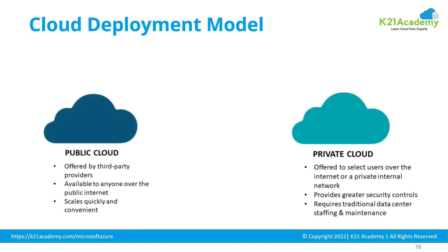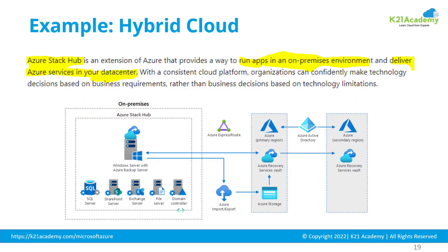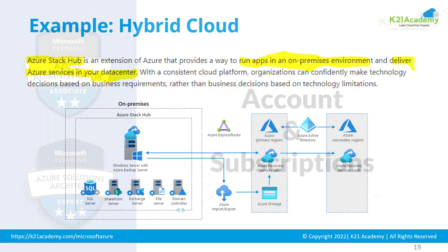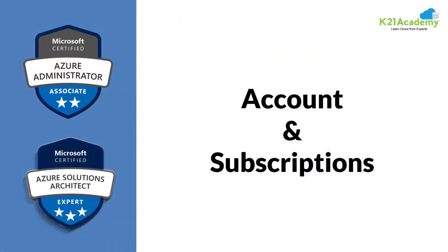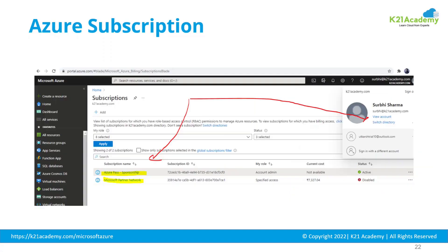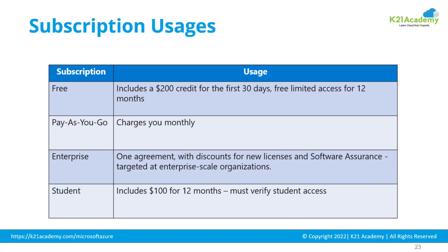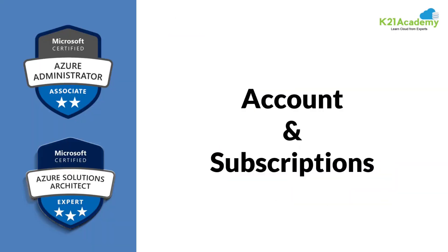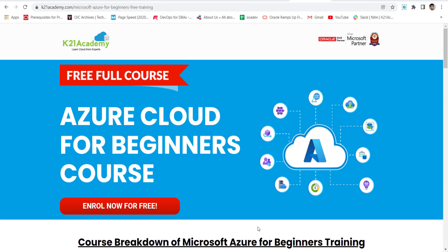To recap, there are three cloud deployment models: public cloud, private cloud, and hybrid cloud. This was an example of hybrid cloud where Azure Stack Hub runs on-premise as private cloud, and standard Azure cloud acts as the public cloud. In the next lesson we are going to cover accounts and subscriptions in Azure — what Azure subscription means, what account means, different types of subscriptions, and how to manage billing and costing.